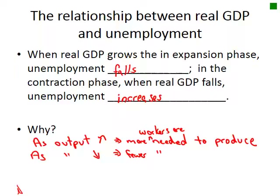We don't need as many people because we're not producing as many goods. So as output increases, more workers are needed to produce. And as output decreases, fewer workers are needed to produce.